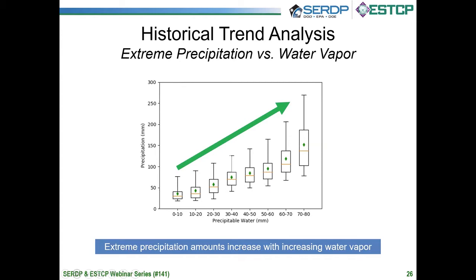This summarizes the results of that analysis. On the vertical axis is the precipitation amount in extreme events, and the horizontal axis is our water vapor metric, precipitable water, binned into various categories. The key message is that we find a very solid, strong relationship in the historical record between extreme precipitation amounts and atmospheric water vapor. It's a monotonically increasing function, which provides support for our hypothesis that extreme precipitation will increase as water vapor increases.